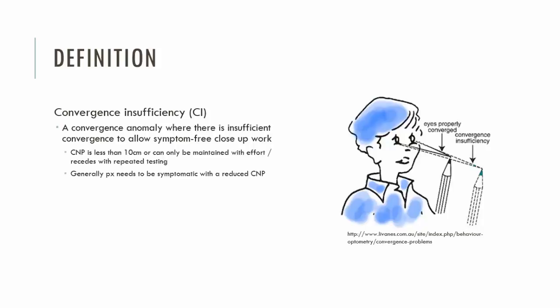Normally you should be able to converge your eyes to the nose or to around 6cm. Where a patient has reduced convergence — a CMP or convergence near point of less than 10cm — the patient may have CI, or convergence insufficiency.